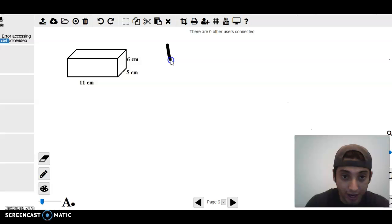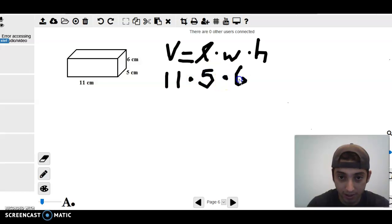So let's first write out our formula. Volume equals length times width times height. And all you got to do is just plug in 11 times 5 times 6.